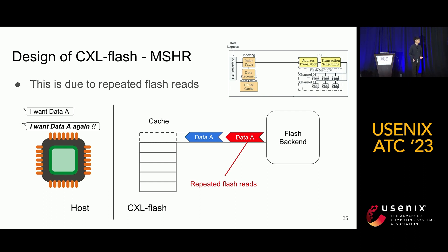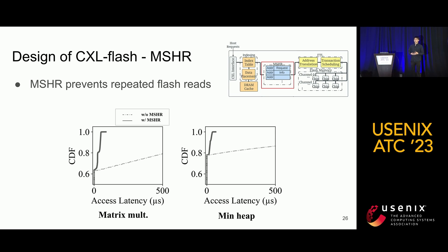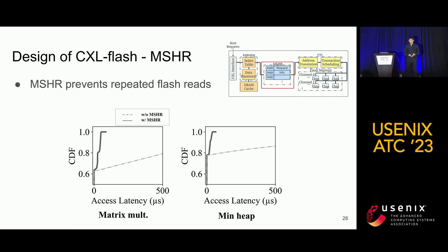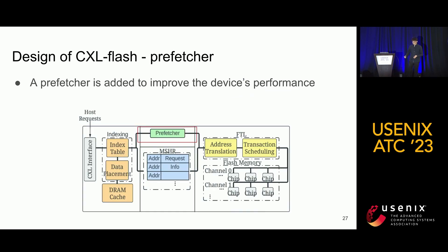To solve repeated flash reads, we add a Miss Status Holding Register, or MSHR, that tracks ongoing flash requests and subsequent host requests. When the data is ready in the device cache, the device can service all corresponding requests at once, avoiding repeated flash reads. As you can see, with MSHR, the long-tail latency of the device is reduced. To further hide the long-tail latency of flash memory reads and writes, we can also add a prefetcher — I will cover more details about the prefetcher later in the talk.